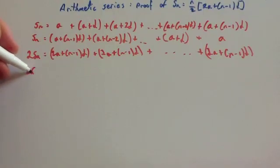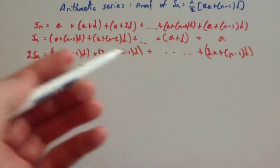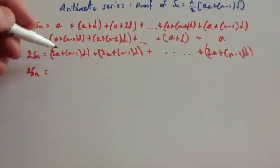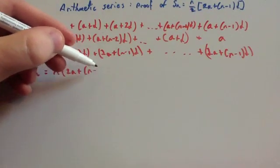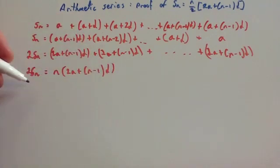So instead of writing it out as adding itself n times, we could just times one of the terms by n. So n bracket 2a plus n minus 1d. Then we divide by 2.